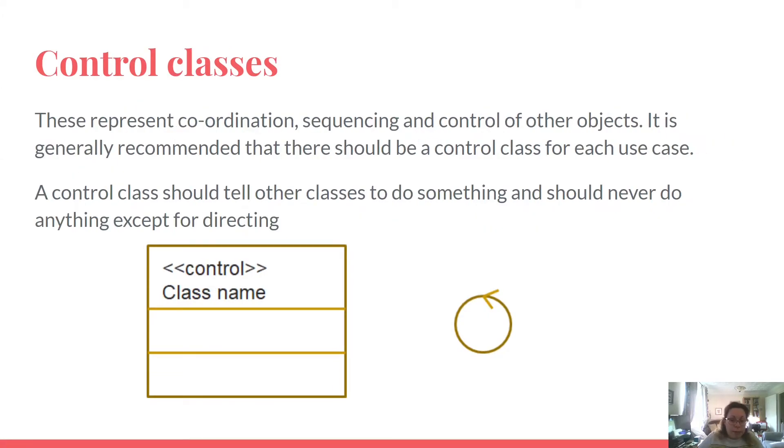Controls are class objects that mediate between boundaries and entities. They orchestrate the execution of commands coming from the boundaries. It is important to understand that you may decide to implement controllers within your design as something other than classes. Many controllers are simple enough to be implemented as a method or an operation of an entity or a boundary class, for example.